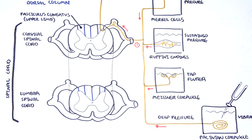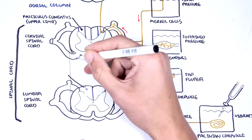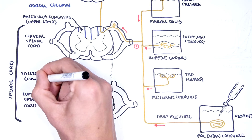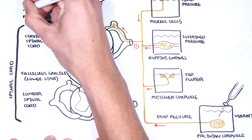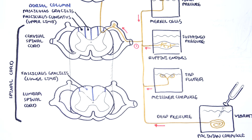There are two sections of the dorsal column: the fasciculus cuneatus and the fasciculus gracilis. The fasciculus gracilis is the part involved in carrying sensory information from the lower limbs. In the lumbar spinal cord depicted here, only the fasciculus gracilis exists, whereas in the cervical spinal cord both the fasciculus cuneatus and the fasciculus gracilis exist.